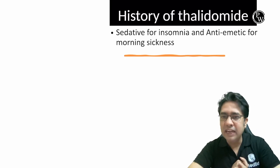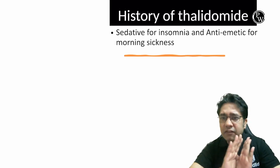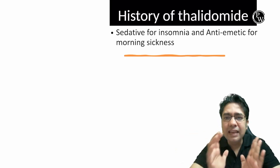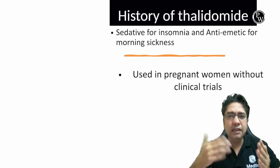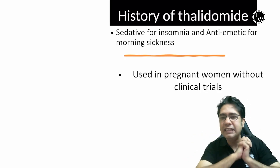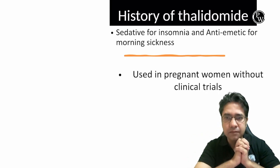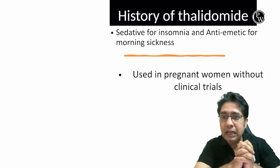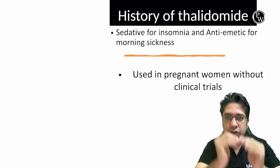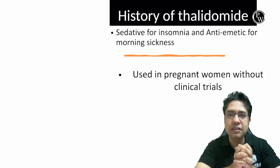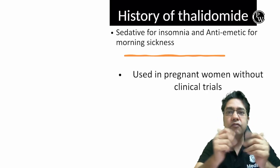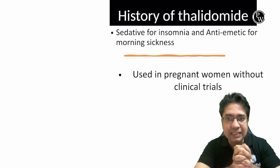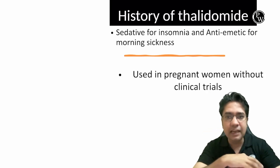At that time, around 1960, there were no clinical trials done on pregnant females. It was approved for morning sickness but clinical trials were not done in pregnant females, and doctors started prescribing Thalidomide in pregnant females for the treatment of morning sickness as an anti-emetic drug.